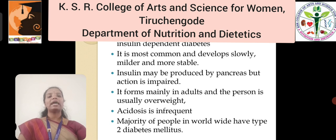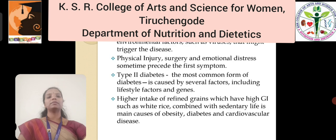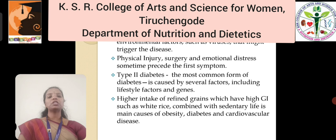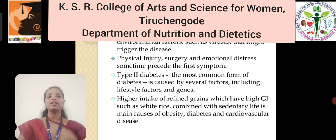Acidosis is infrequent in Type 2. The majority of people worldwide have Type 2 diabetes mellitus. Type 1 diabetes mellitus is caused by genes and environmental factors such as viruses that might trigger the disease. Physical injury, surgery, and emotional distress sometimes precede the symptoms of Type 1 diabetes. Type 2 diabetes is the most common form, caused by several factors including lifestyle factors and genes.